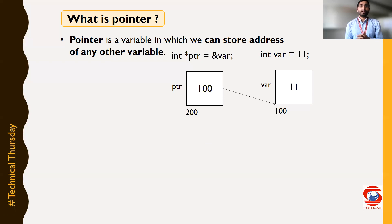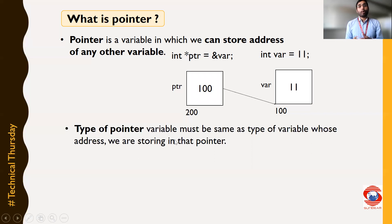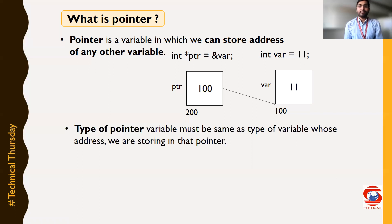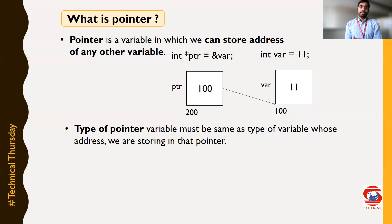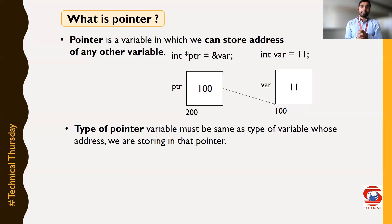Now, we need to understand 2-3 terms for this pointer variable. The very first is the type of pointer. The type of a pointer variable must be the same as the type of variable whose address you are going to store inside that pointer variable. In our case, we want to store the address of variable var inside PTR, and the type of variable var is integer. That's why we need to have the type as integer pointer, and that's why we have declared PTR as of type integer pointer here.